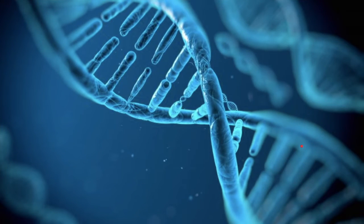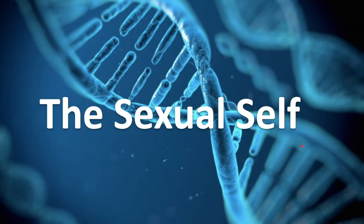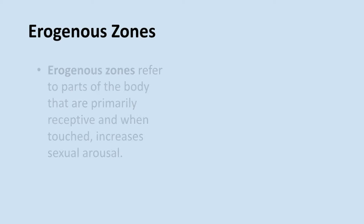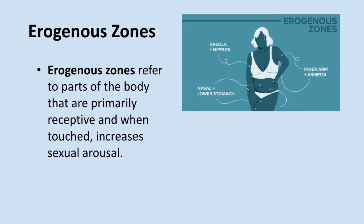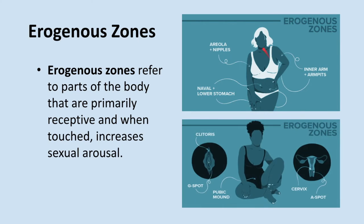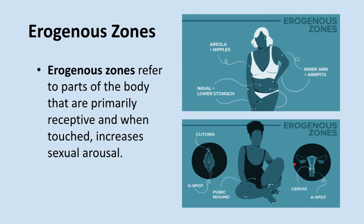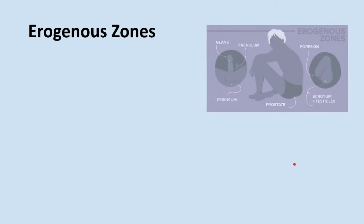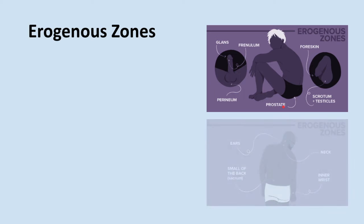Let us now move on to the sexual self. First, let us talk about erogenous zones. Erogenous zones refer to parts of the body that, when touched, increase sexual arousal. Some common erogenous zones are the mouth, breasts, genitals, and anus. But take note that erogenous zones may vary from one person to another — some people are aroused in the most unlikely places too.